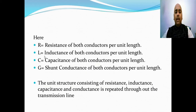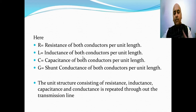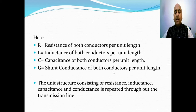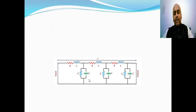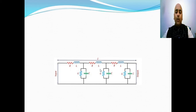Here R represents the resistance of both conductors per unit length. L represents the inductance of both conductors per unit length. G represents the shunt conductance per unit length. This unit structure consisting of R, L, G, and C is repeated throughout the transmission line — that is, for each unit length of the transmission line, resistance, inductance, capacitance, and conductance hold the same values.